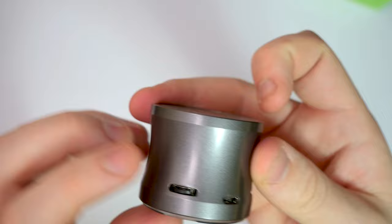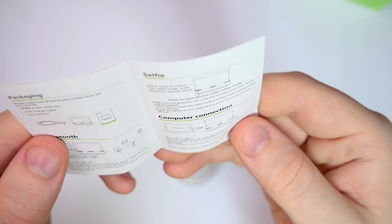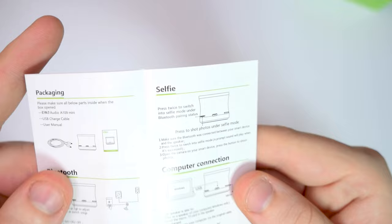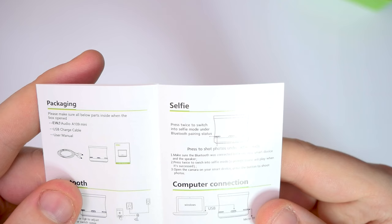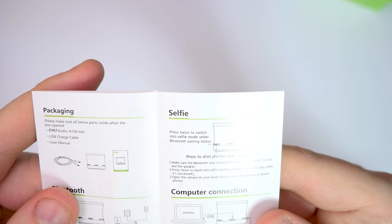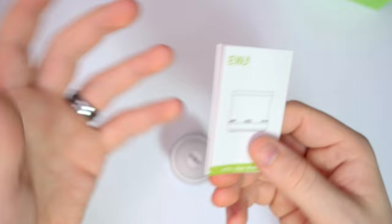First of all we have this little changer here that I'm not 100% sure what it is. I thought it was a volume control but it's called selfie. I'm not sure what that means. So if you guys can see that there, selfie, please press twice to switch into selfie mode on the bluetooth paired status. Press to shoot photos under selfie mode, make sure the bluetooth was connected between the smart device.